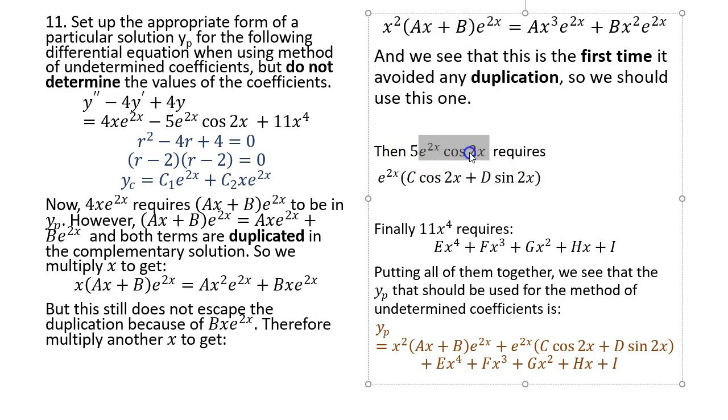Here, e to the 2x cosine 2x. When you differentiate cosine, you need a sine. So with the product rule, you have e to the 2x with a sine 2x. So it will require these two. And then if you have x to the 4th, differentiating gives you x cubed, and differentiating gives you x squared, and so on. So all these should be present in your yp. Therefore, putting all of them together - this from here, this one from here, this one from above - putting all of them together, we have the answer yp as this.